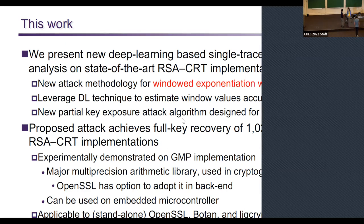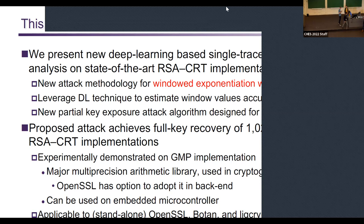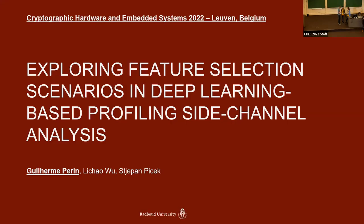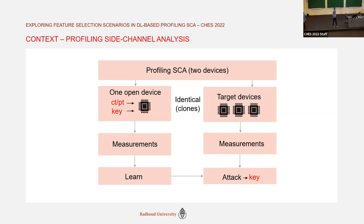Introduction of Guilherme Perin. The talk covers a specific open problem in deep learning for side-channel analysis: feature selection, which is not well covered in recent research. The context is profiling side-channel analysis.